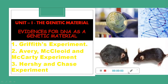Hello students. In the last lecture we started Unit 1, The Genetic Material. In this unit we are studying about the evidences for DNA as a genetic material. In the last lecture we already finished the first experiment — Griffith's experiment. Frederick Griffith in 1928 performed this experiment and observed that R-type strains of Streptococcus pneumoniae get transformed to S-type strains. He called the substance responsible for this transformation the transforming principle or transforming factor.